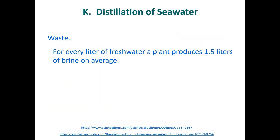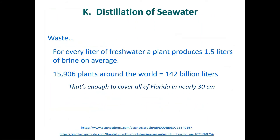One thing about desalination is it produces a lot of waste. One liter of fresh water produces about one and a half liters of brine — so what do you do with all that brine? In a lot of places they're dumping it directly back into the ocean, which the fish don't like — it basically will kill a lot of plant and animal life near the outlet. In Australia I recall reading about something like evaporation ponds, similar to tailings ponds, hoping the brine would evaporate and leave the salt behind.